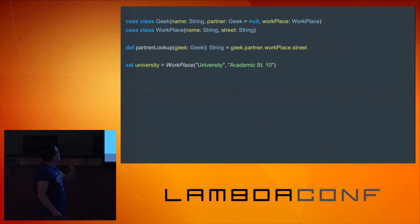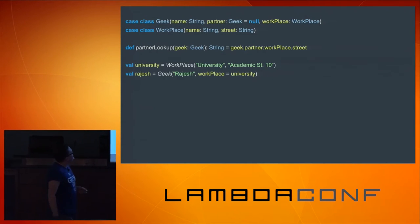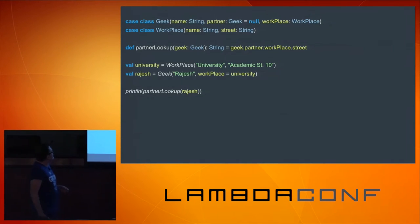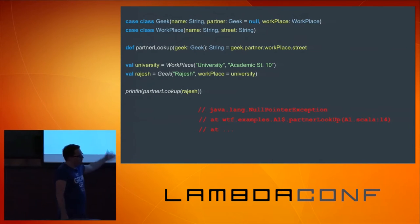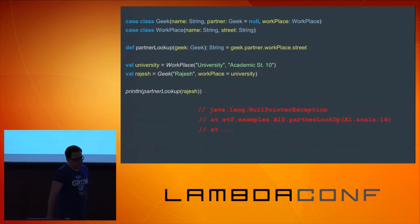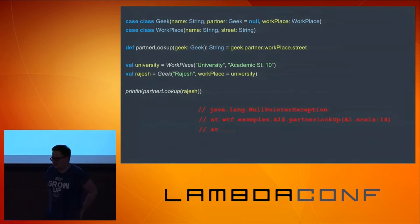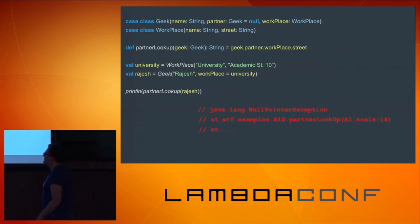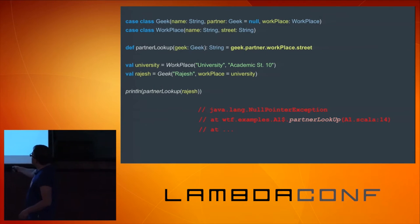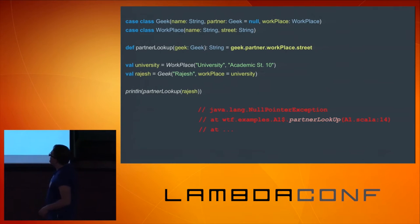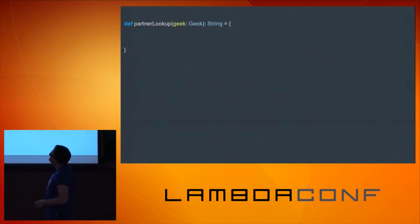So we have university, we have Rajesh, and we call the partner lookup method, and we have an exception. So that sucks. We try to reimplement that quickly and to deploy as fast as possible.